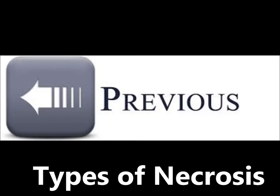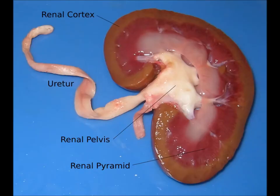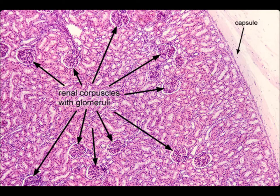First we will see the cut section of the kidney. A normal kidney on cut section has a nice outer cortex, medulla, renal pelvis, and attached ureter. There is no focal defect and there is homogeneous color.